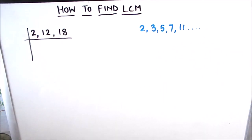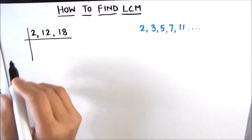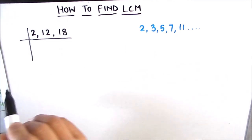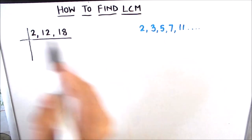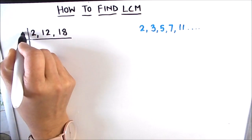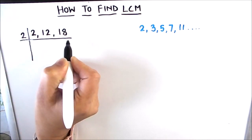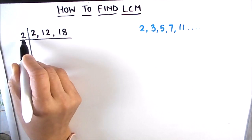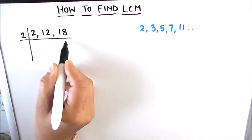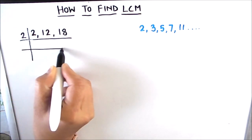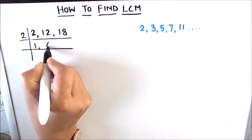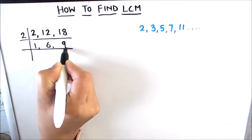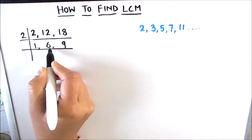Let's start the prime factorization method for finding the LCM of 2, 12, and 18. We'll start with the lowest prime number, which is 2. We see that 2 is a factor of all three numbers and all three are fully divisible by 2. So: 2 × 1 = 2, 2 × 6 = 12, and 2 × 9 = 18.